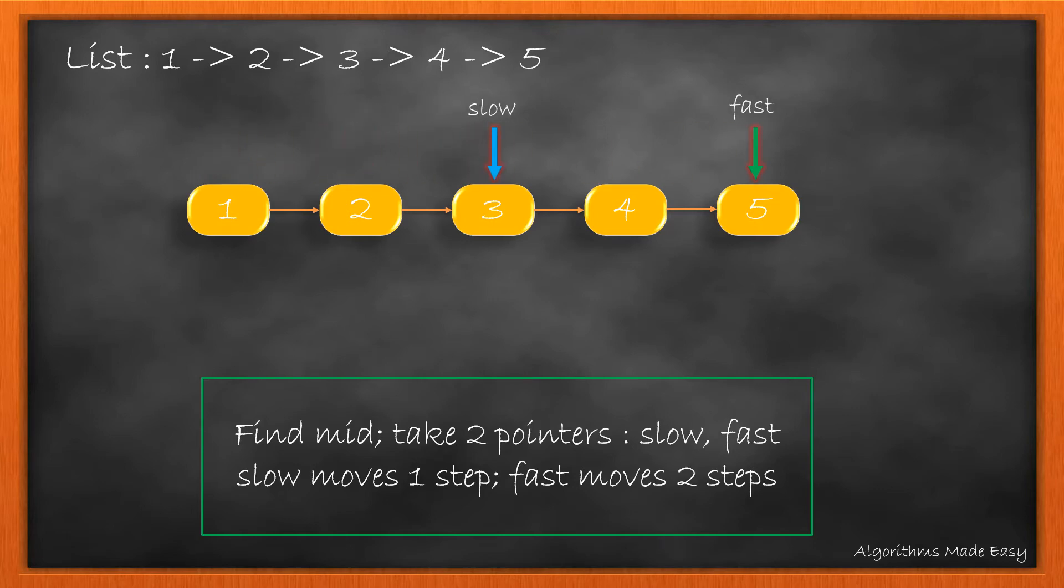As here, fast.next is null, 5 being the last node. We stop and the node at the slow pointer is our mid. Thus, node 3 becomes our mid.